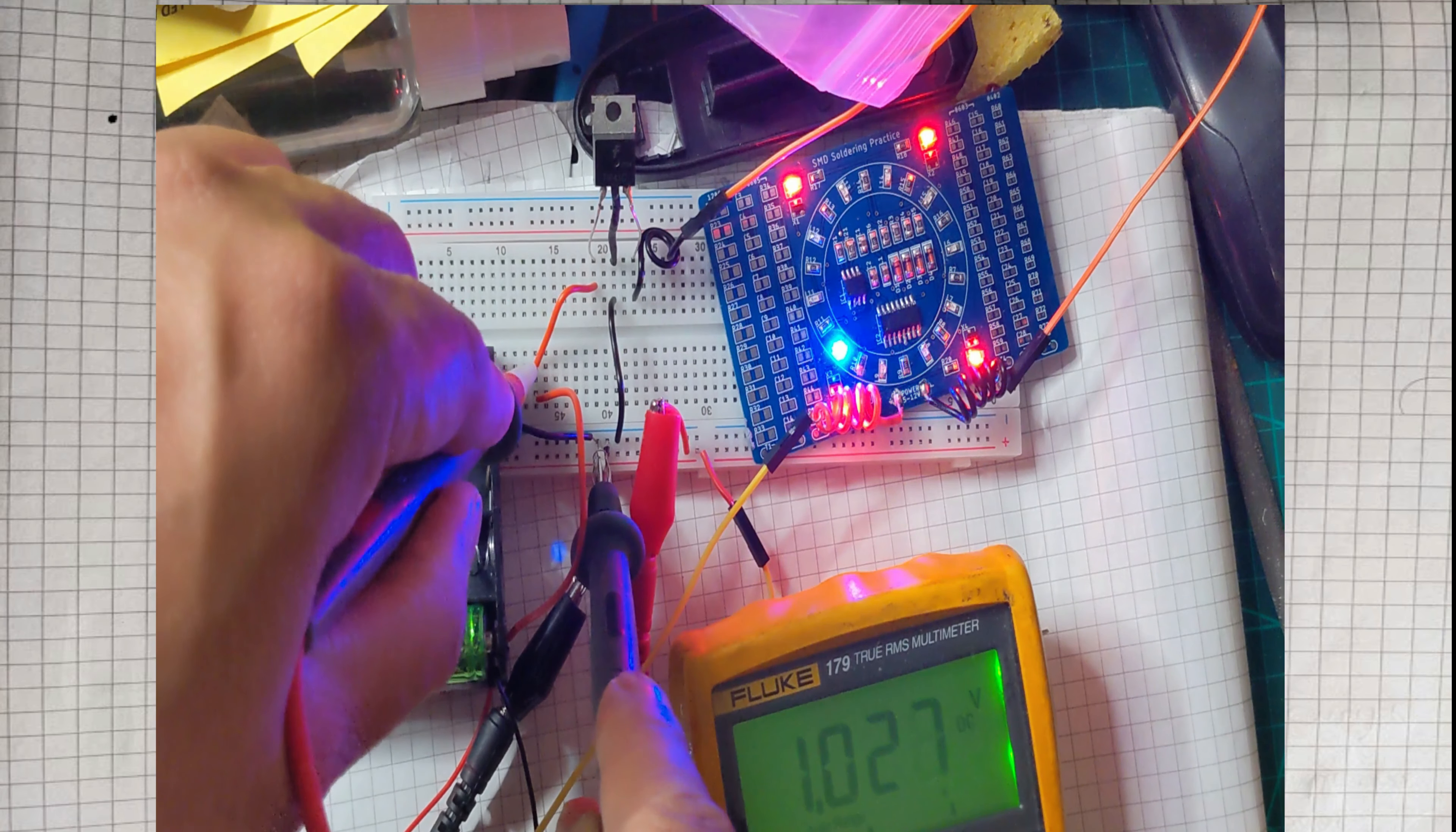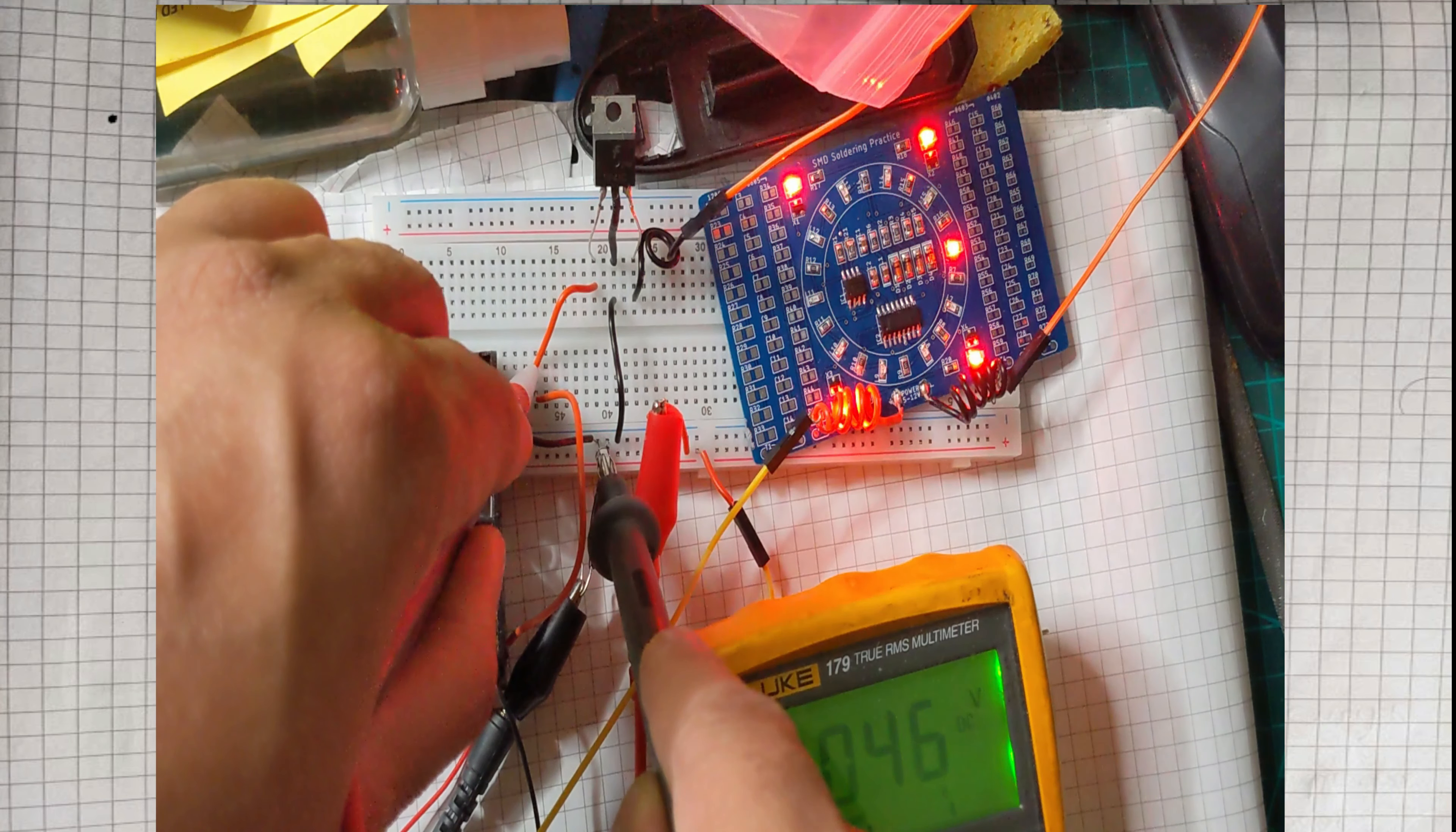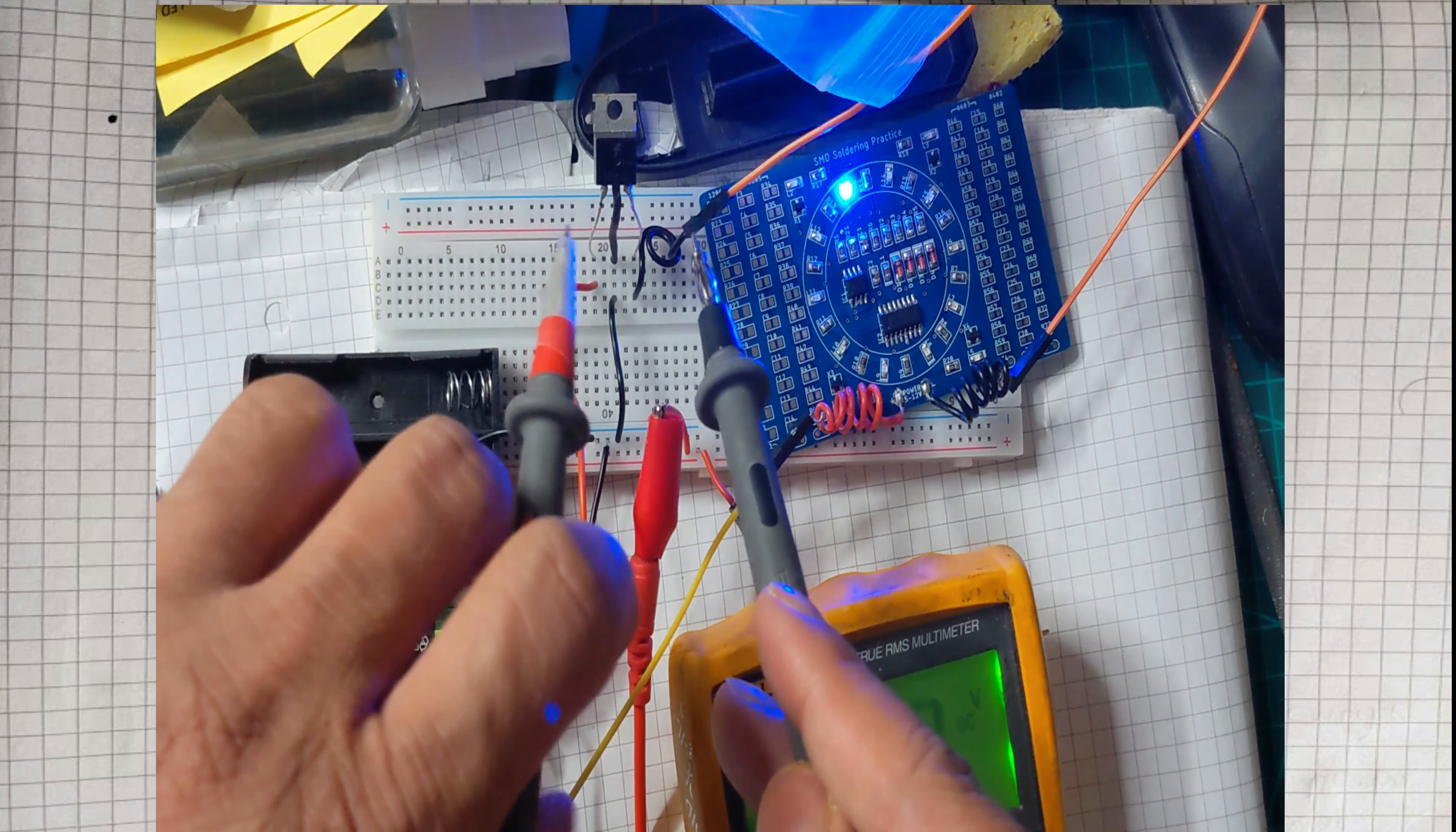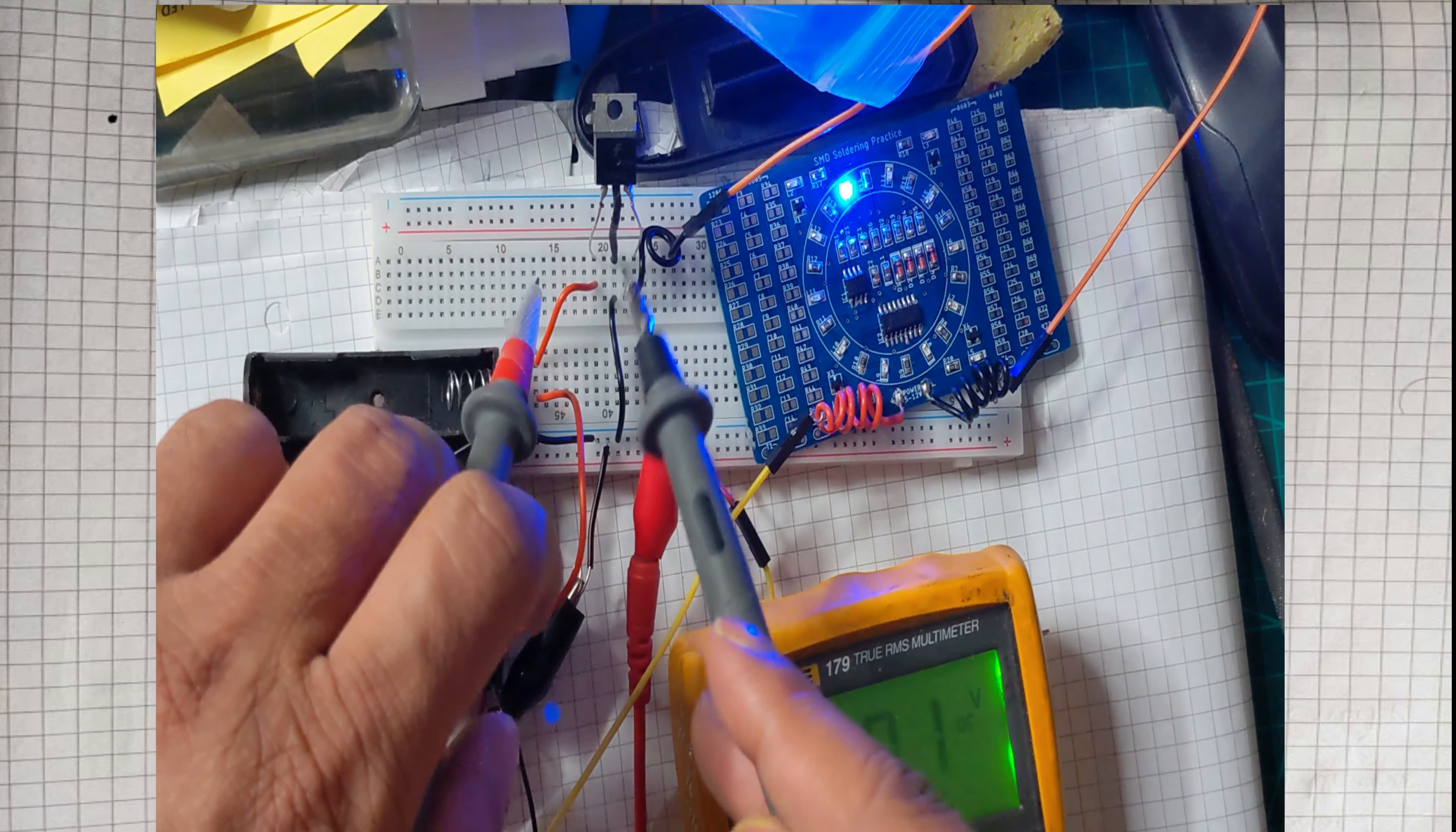This is the way you can use NPN transistor as an amplifier, a switch, and many other things. Now NPN transistor is just for baseline use, low voltage use. Basically if the voltage is less than 100 volts you can use NPN transistor.